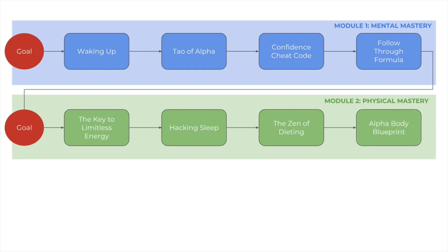In the eighth lesson, we'll be talking about the alpha body blueprint. This is where I'll reveal the exact step-by-step blueprint on how you can sculpt the lean, strong, and muscular physique that resembles a Greek statue, all accomplished in less than three hours per week. Those are the four lessons that encapsulate the second module on physical mastery.